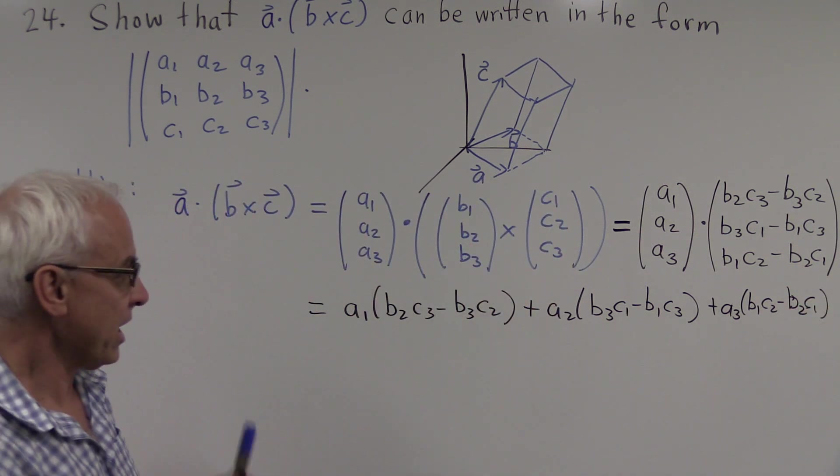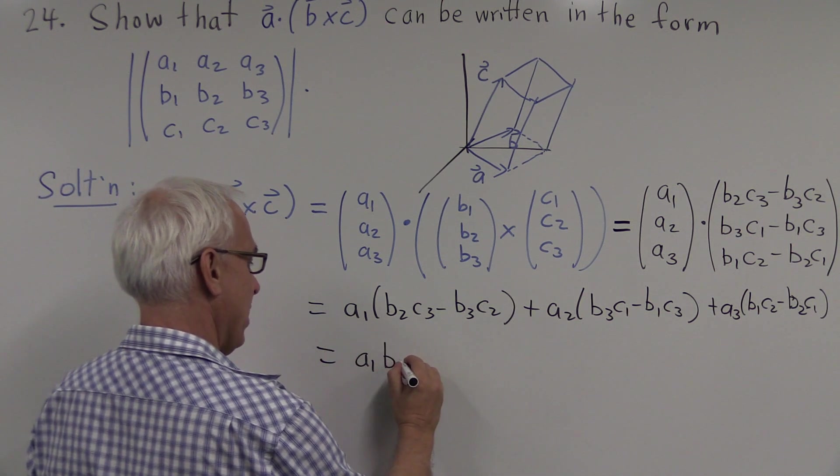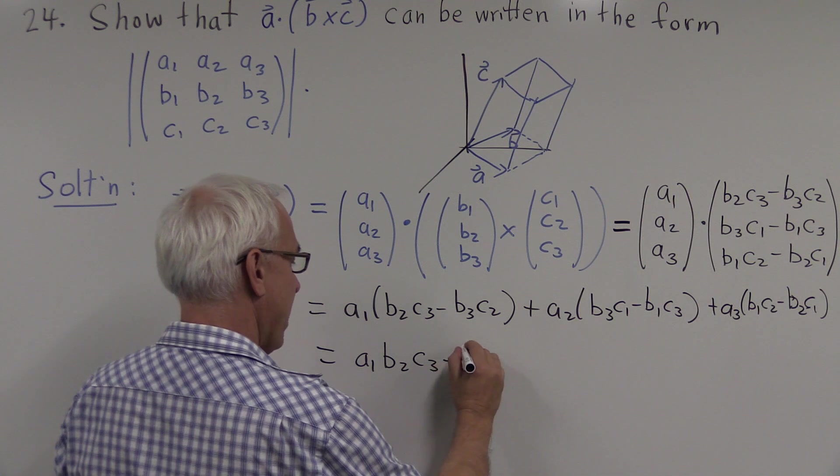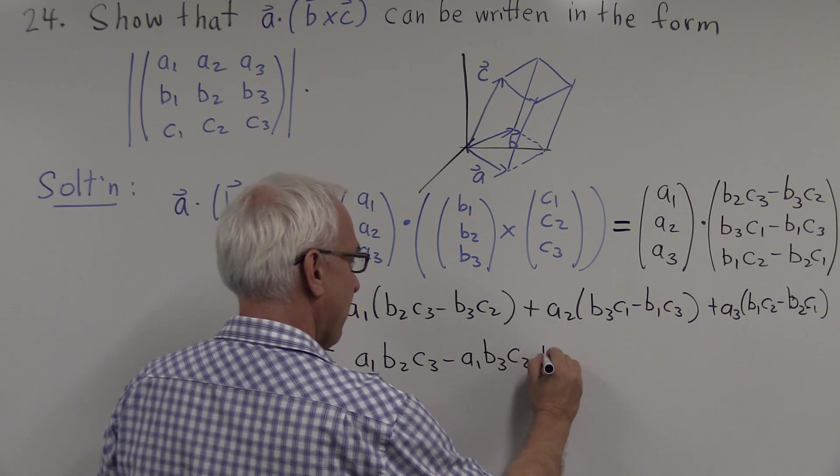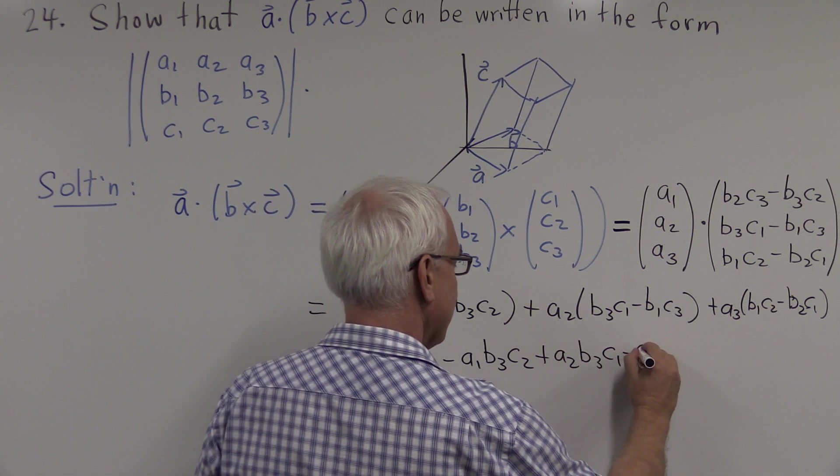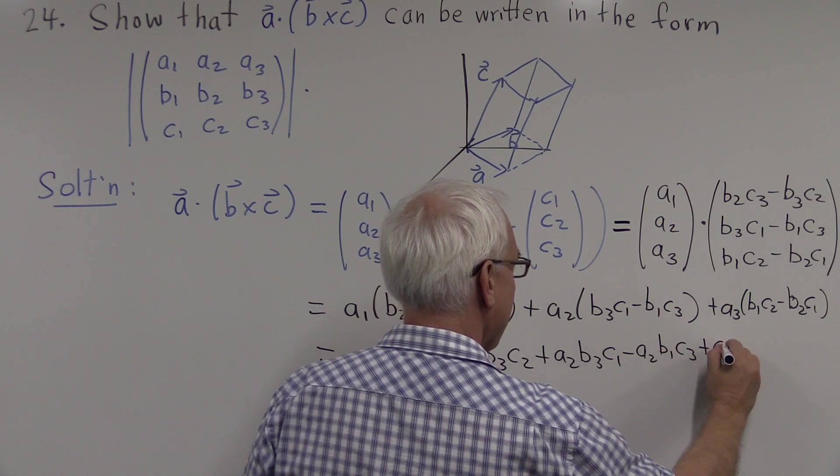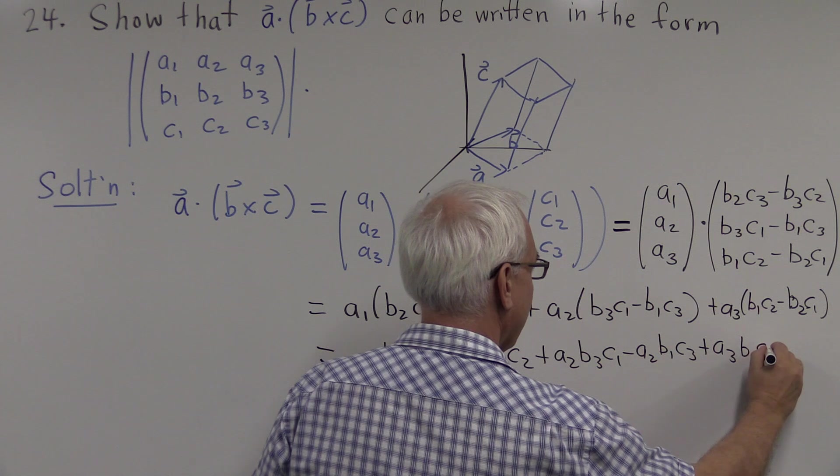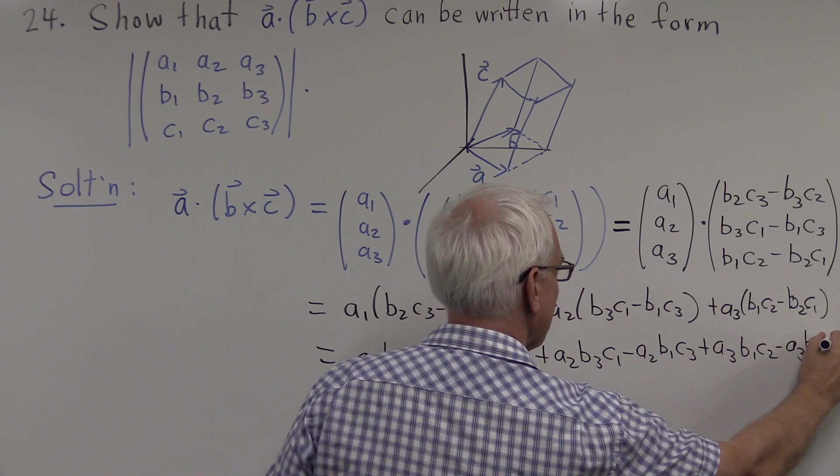So there are altogether six terms in this expansion: a1 b2 c3 minus a1 b3 c2, plus a2 b3 c1, minus a2 b1 c3, plus a3 b1 c2, minus a3 b2 c1.